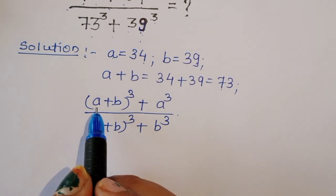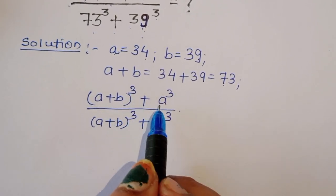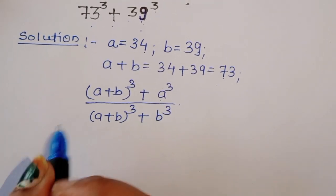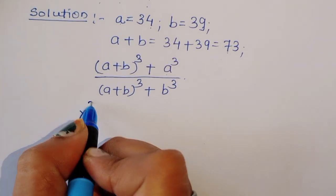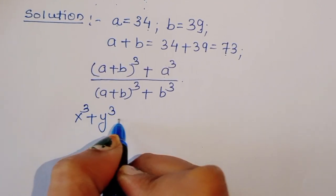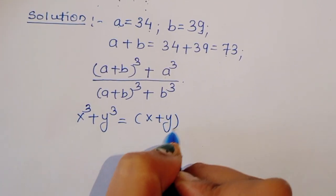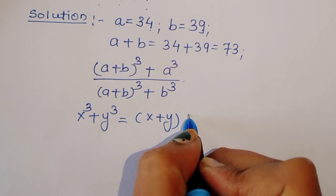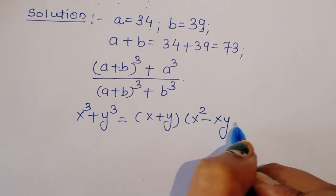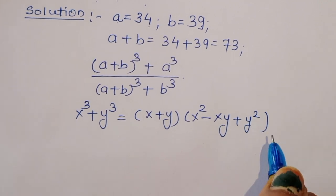Now you can see here, this is term X and this is Y — so we have X³ plus Y³. We apply the formula: X³ plus Y³ equals (X plus Y) times (X² minus XY plus Y²). This is the formula we will use.